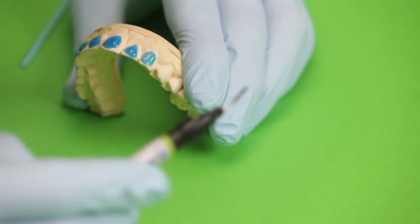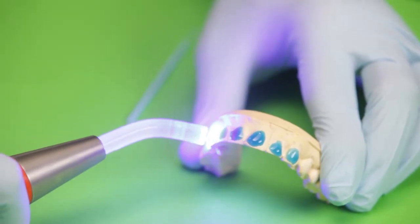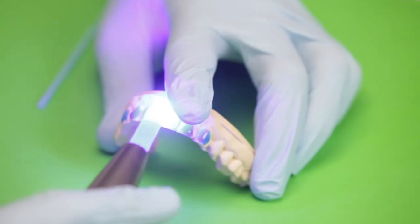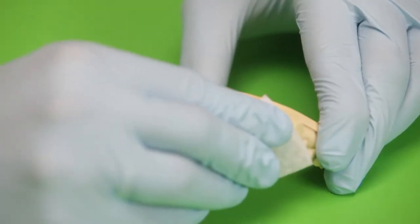You can then light cure the resin. I'll just wipe it with some alcohol swabs to remove the oxygen inhibited layer.